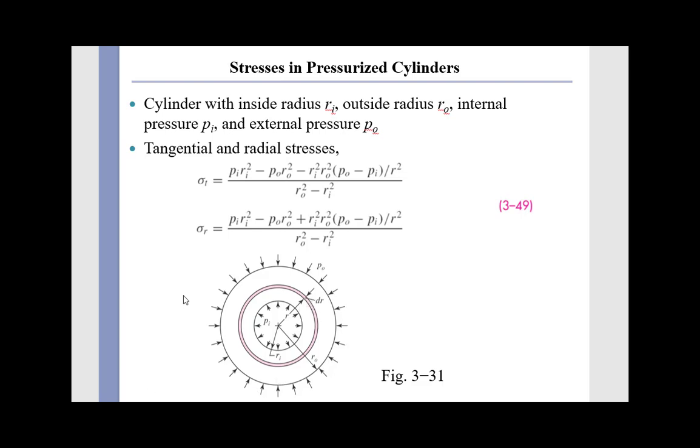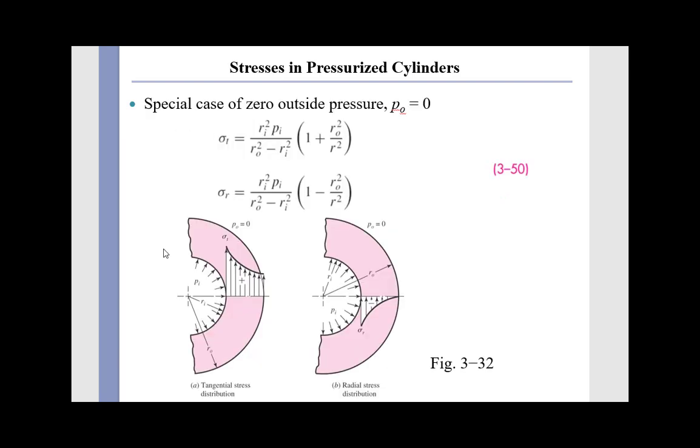If we have an internally pressurized cylinder, the hoop and radial stresses have their largest magnitude at the inner surface where the pressure is applied, and it falls off as we move to the outer surface.